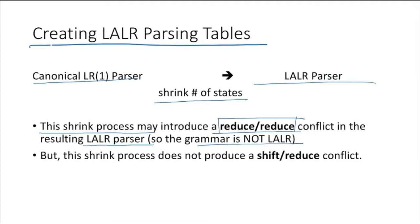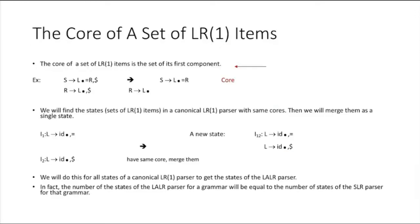I was telling you that if it is going to reduce—because there is a chance that as you merge multiple states from LR(1) item set, it can introduce some reduce-reduce conflict. So if that is happening, then we will say that for this grammar LALR is not possible, so that grammar is not LALR. But this shrink process does not produce a shift-reduce conflict at all. This merging process can give you only reduce-reduce conflict, but it will not give you a shift-reduce conflict.